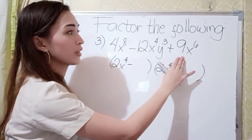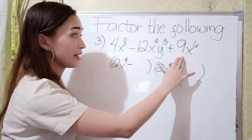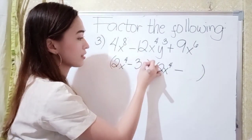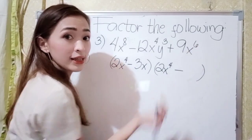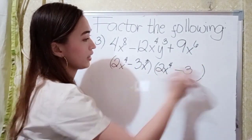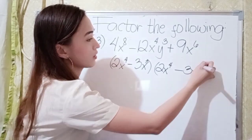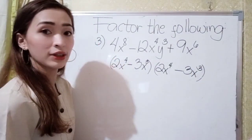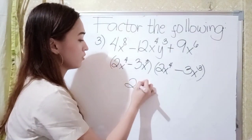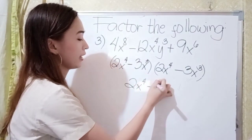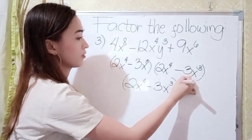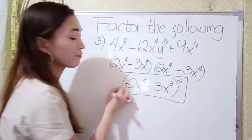Next, what is the square root of 9? The square root of 9 is 3. We also have x here, so just write x. Then 6 divided by 2 is 3, so we have 3x cubed. The simplified form of our answer is 2x to the 4th power minus 3x cubed, squared. So that is our final answer.